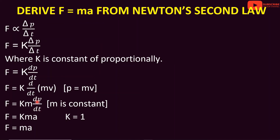What is d by dt of v? That is the acceleration. So d by dt of v is equal to a. Therefore, F is equal to k into m into a. If k is equal to 1, then F is equal to ma.